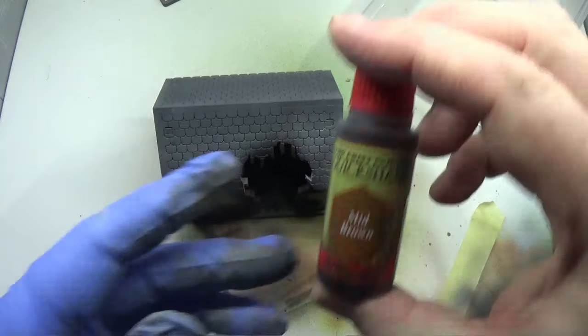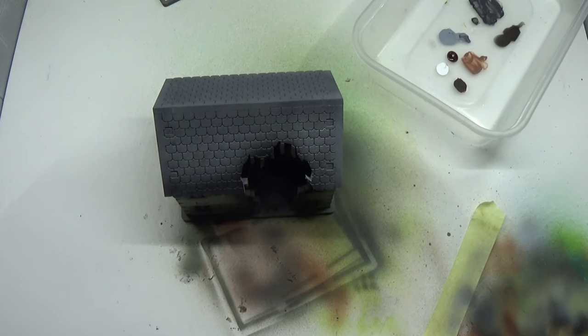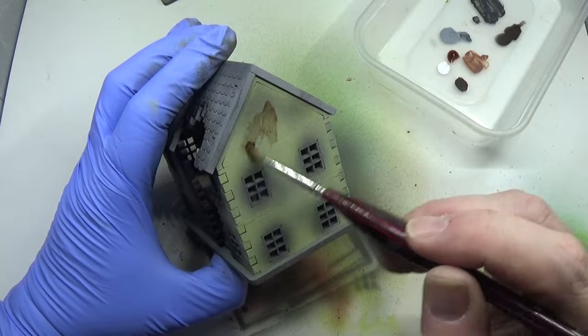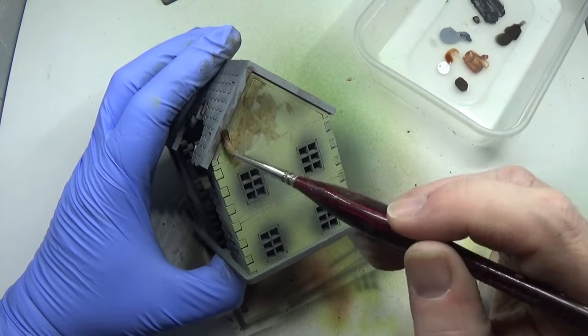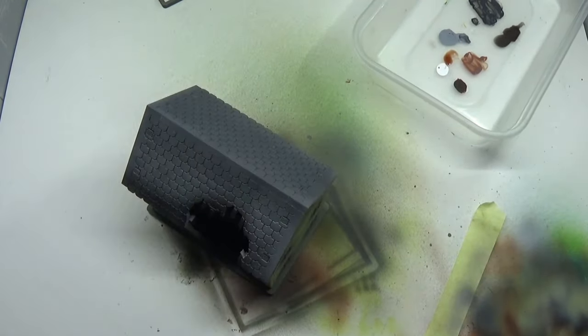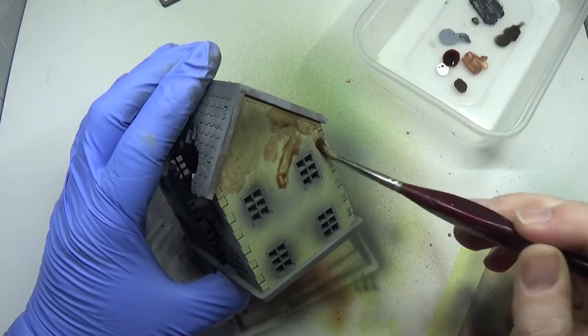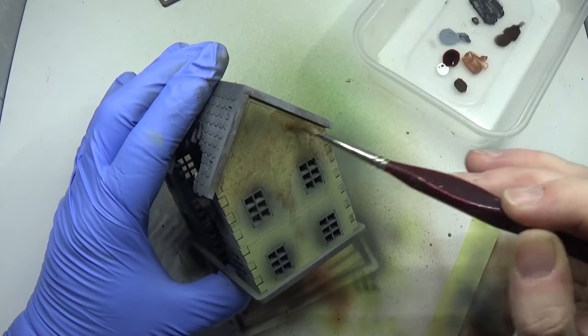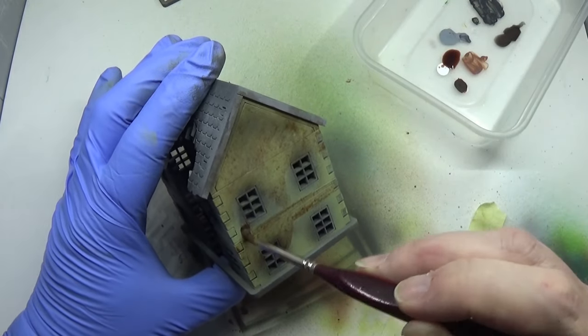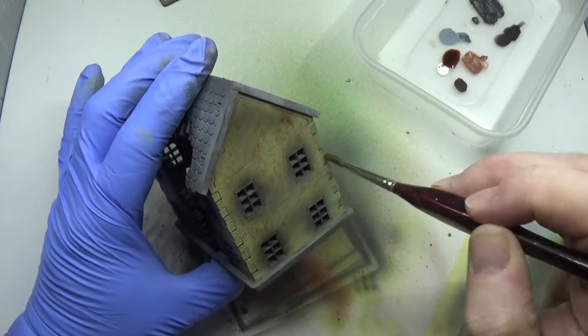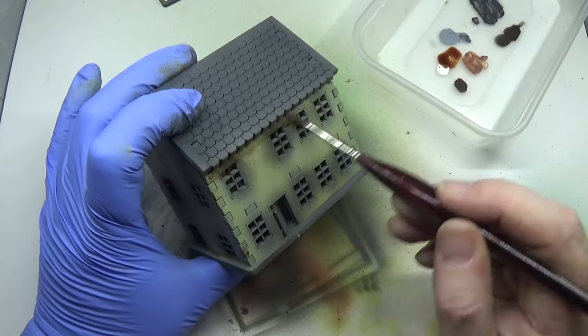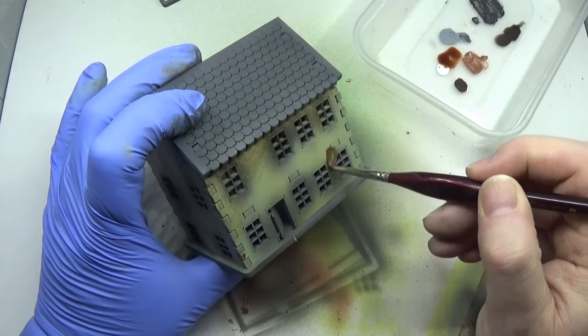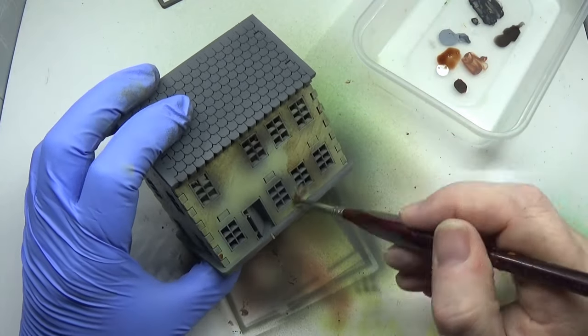So the only thing that remains to do is give the whole of the walls, the external walls, a wash with mid brown from a painter. Now for some strange reason this wasn't going on like a wash. I don't know what's going on, but a nice age effect to the walls. So I'm happy.